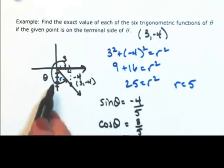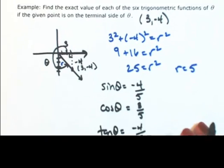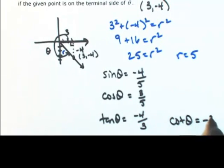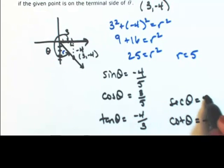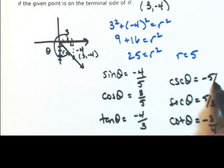Tangent of theta, opposite over adjacent. Okay, once you have those three, just take the reciprocals. So the cotangent of theta is negative 3 fourths. Secant of theta is 5 thirds. And then the cosecant of theta would be negative 5 fourths.